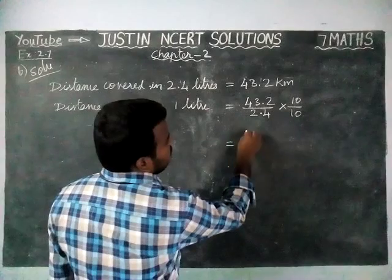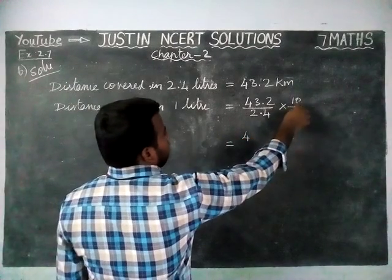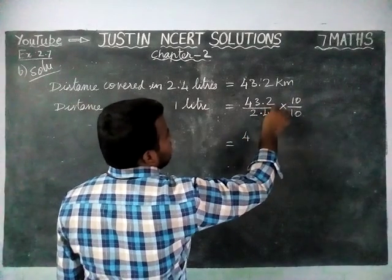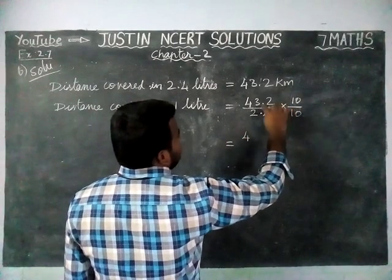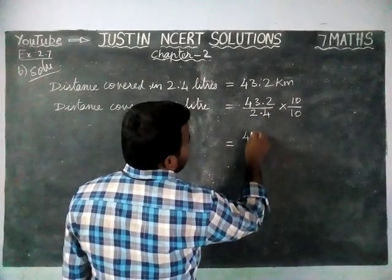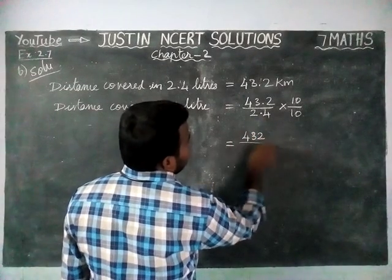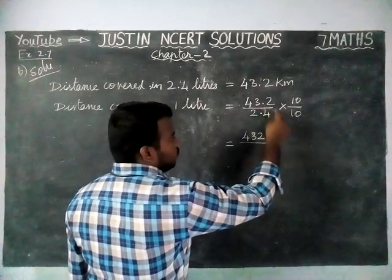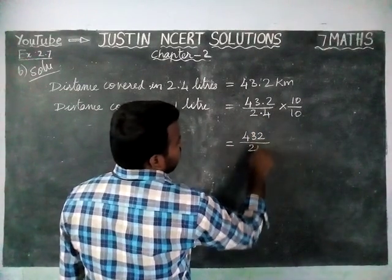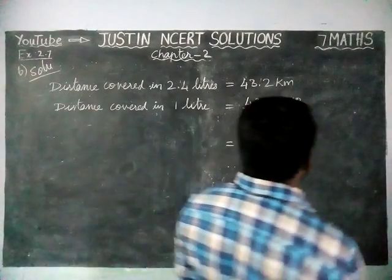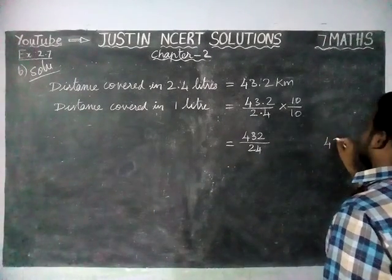When we are multiplying by 10, we have to move one step to the right hand side, because we have only one zero. So, moving the decimal point one step to the right hand side gives us 432 divided by 24.